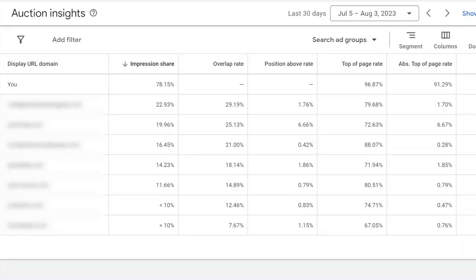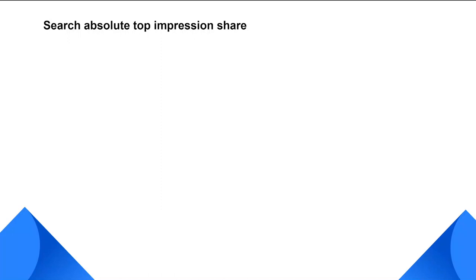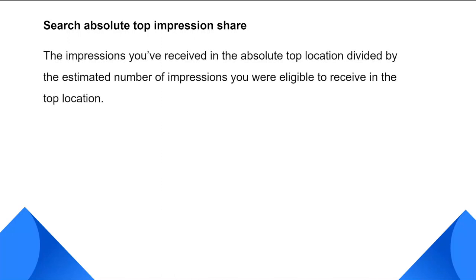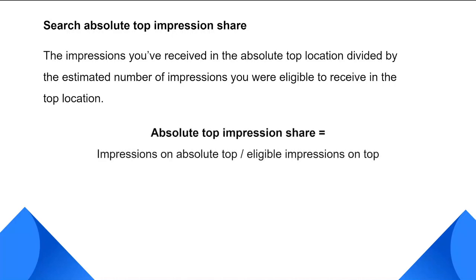So why are the numbers different here from the previous page? The reason that the numbers on the campaign page and auction insights page are different is because their definition is slightly different. What you see on the campaign page for absolute impression share is showing you the impressions that you received in the absolute top location — meaning the very first ad above the organic search results — divided by the estimated number of impressions you were eligible to receive in the top location. So in short, out of the amount of times that you were eligible to appear on the top, how many times you actually appeared?